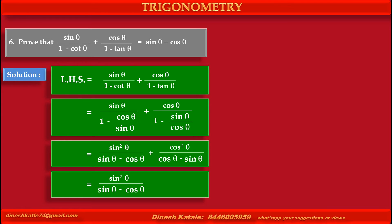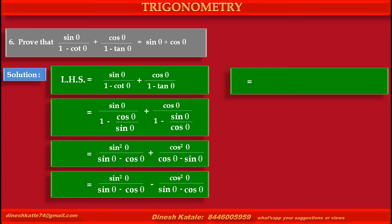The first term is sin squared theta upon sin theta minus cos theta. In the second term we want the same denominator, sin theta minus cos theta, but here it is cos theta minus sin theta. So by taking minus common, the denominator becomes sin theta minus cos theta.